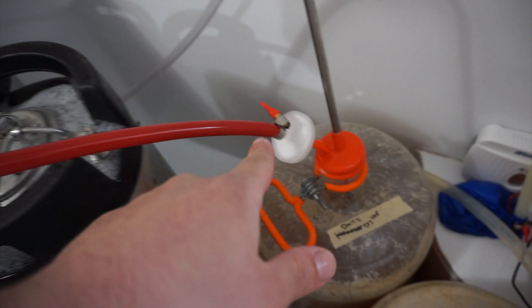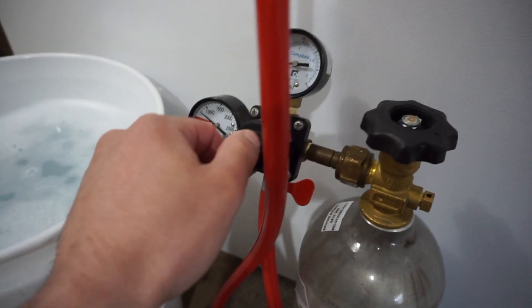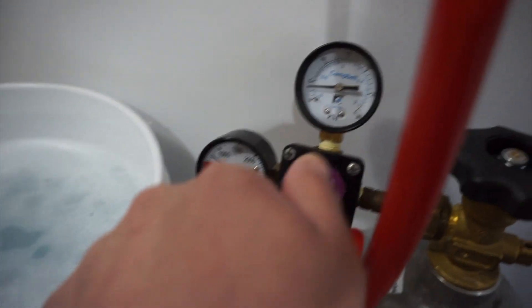So everything's hooked up. Cap's on, CO2 is hooked up, ball lock is on the keg on the out port, poppet's up to relieve the pressure. Now what we're going to do is turn the gas on but have it at zero and slowly start cranking the PSI up.